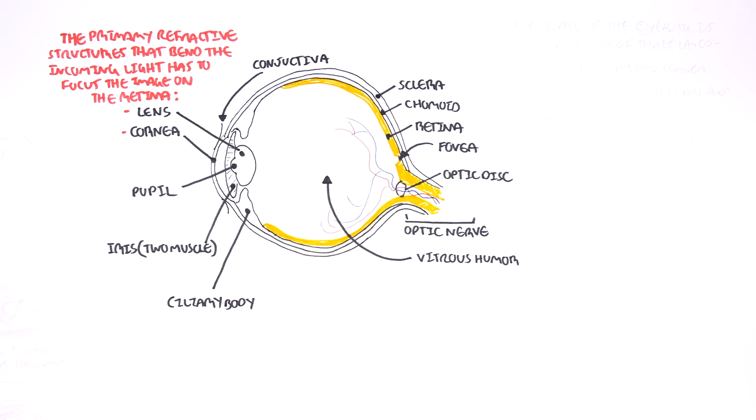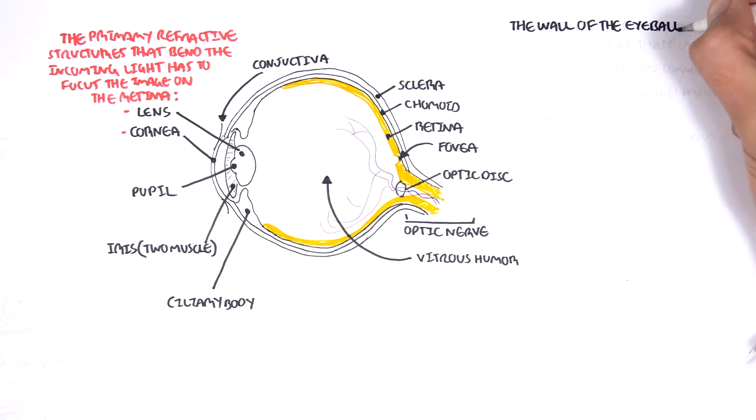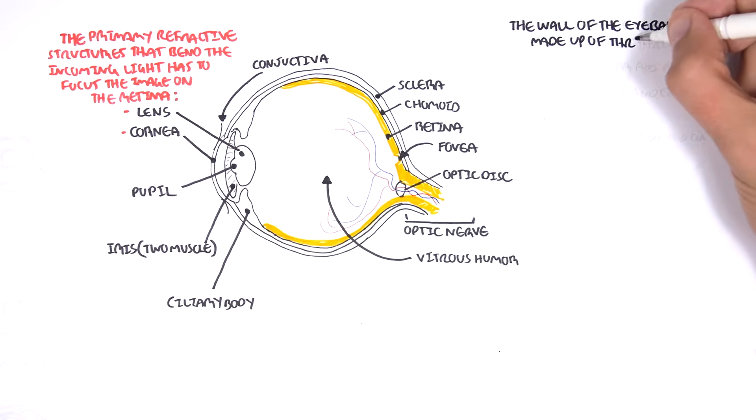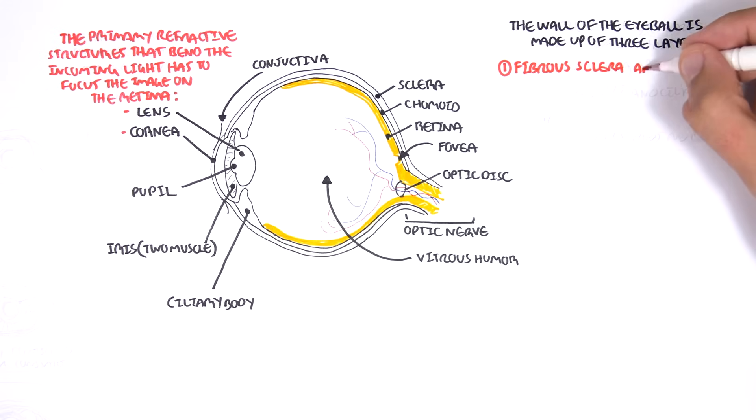Before going into the anterior cavity and the posterior cavity, let us recap the layers of the eyeball. The wall of the eyeball is made up of three layers. The first layer is the fibrous sclera and the cornea, which is in the same layer.